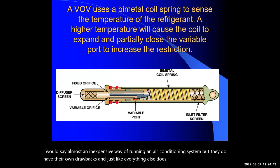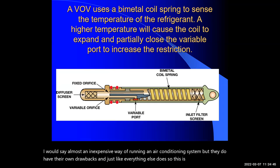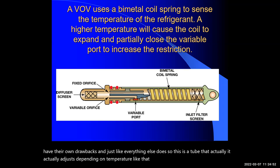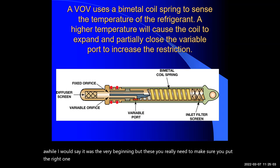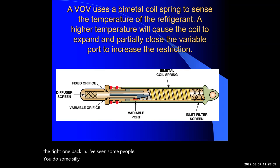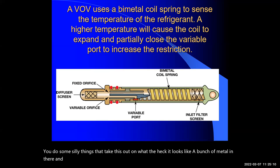Fixed orifice tubes are getting to be not as popular as they used to be. It was a very inexpensive way of running an air conditioning system, but they do have their own drawbacks. There's also a variable type that actually adjusts depending on temperature, and you really need to make sure you put the right one back in. I've seen some people take it out, see a bunch of metal in there, and put in a standard fixed orifice — and it does not perform as well.